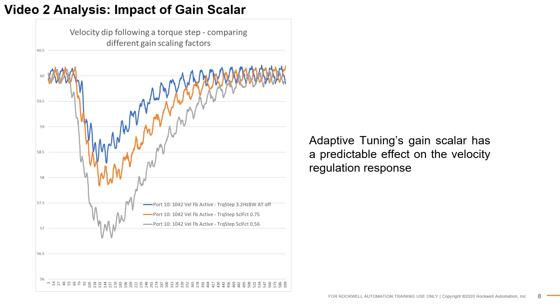Likewise, when the gain scalar continues detuning to 0.5, the effective system bandwidth is further reduced. This is shown by the gray trace. It is observed that the step response changes just like it would if the velocity regulator gains were manually updated. This concludes the gain optimization demonstration.